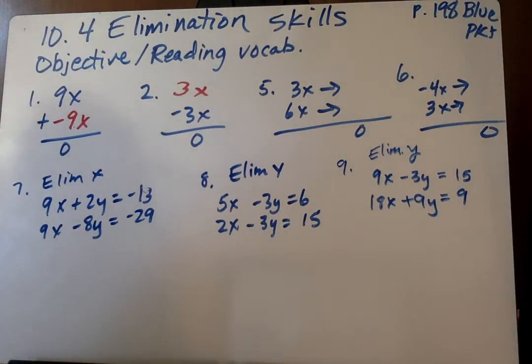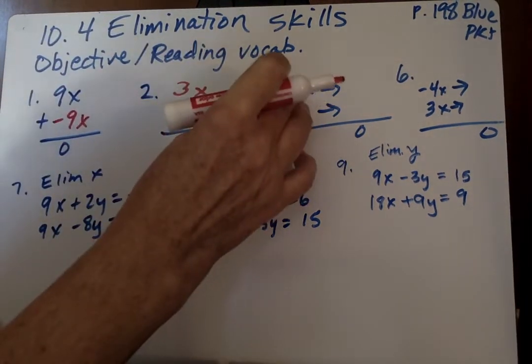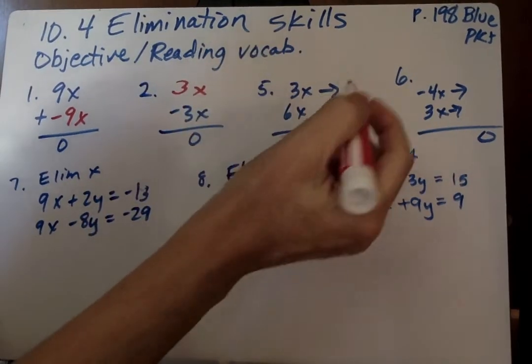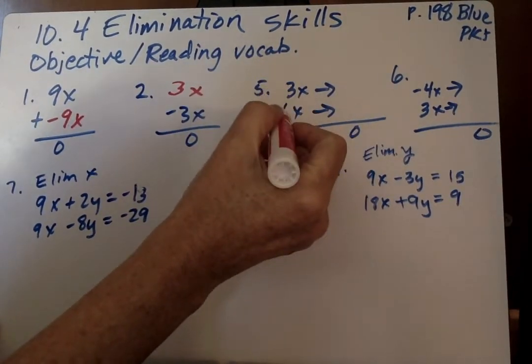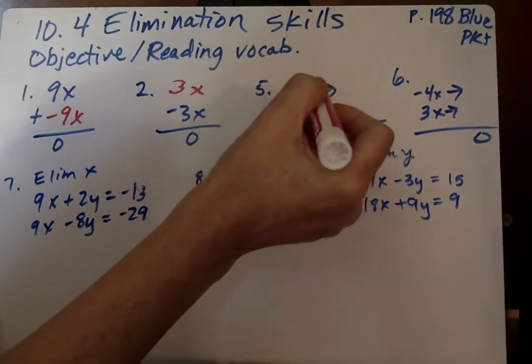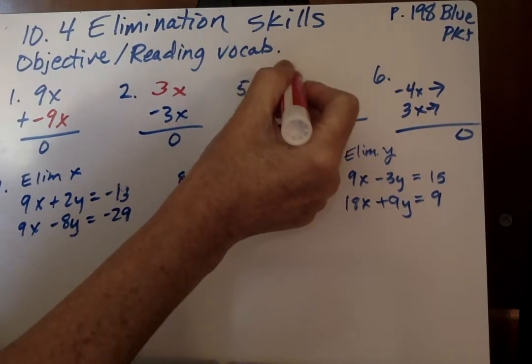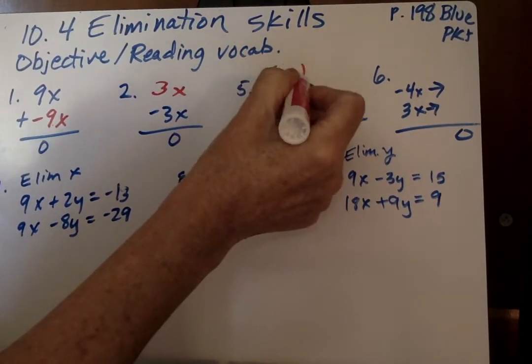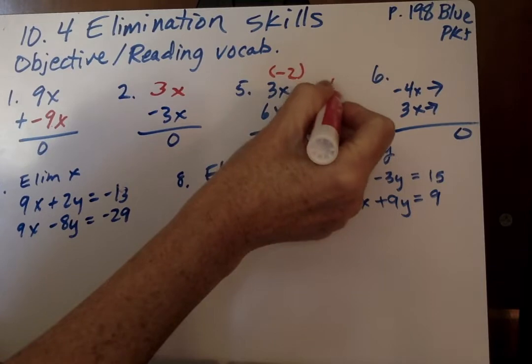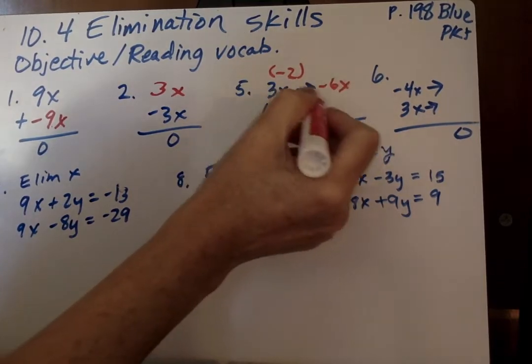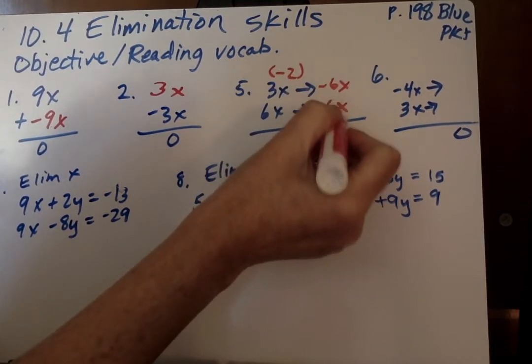Next, we go on to number 5. It has 3x and 6x, and we say what do we do with those two? We have to find a multiple of those two. What is the multiple of 3 and 6? 3 goes into 6 evenly, so it would be 6. So we're going to multiply this by negative 2, and we're going to get negative 6x, so that when we add it to this 6x, we get zero.